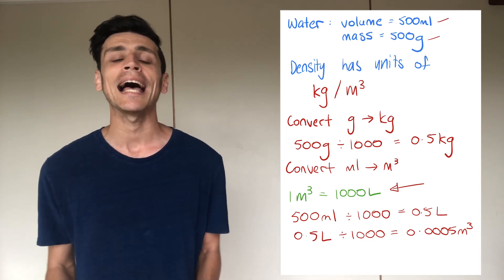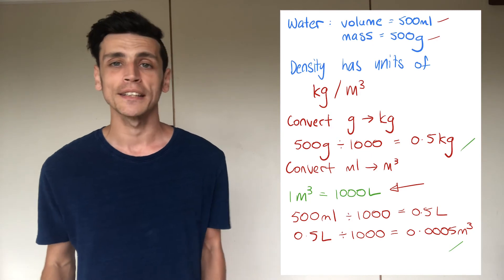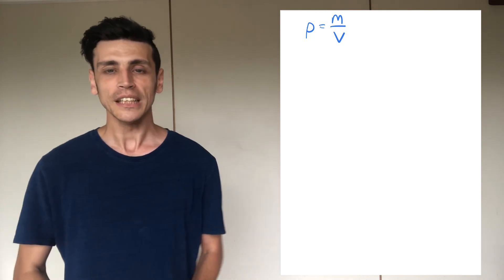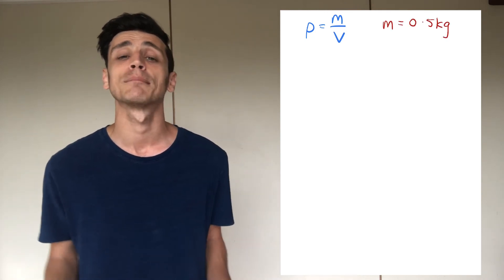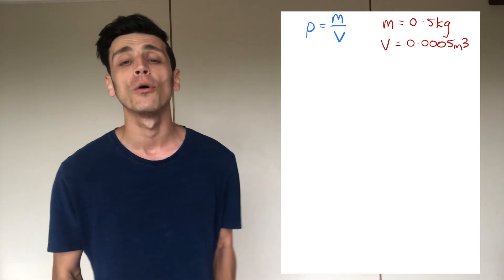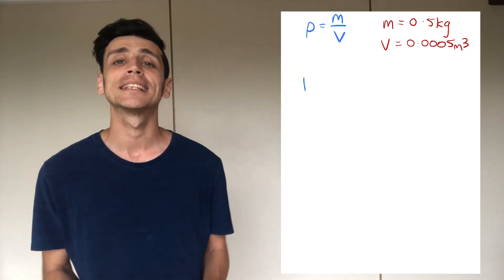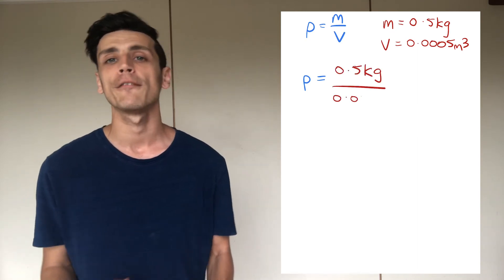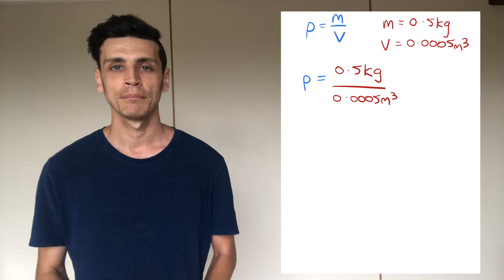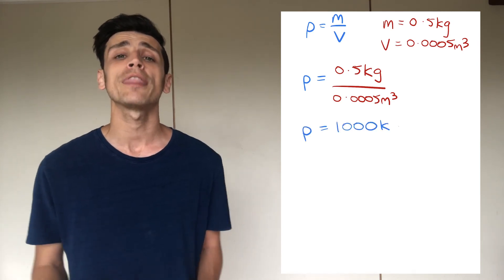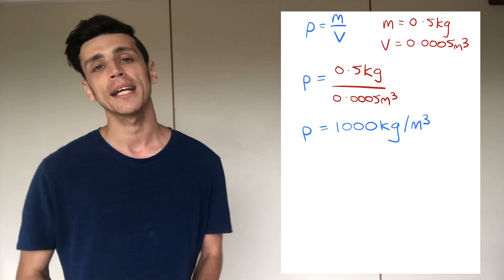So now we have cubic meters and we also have kilos. Now all we have to do is simply put these two values back into our formula and solve it. Remember our density formula is mass divided by volume. So in this case our density for water is going to be 0.5 kilos divided by 0.0005 cubic meters and what we end up getting is 1,000 kilos per cubic meter.